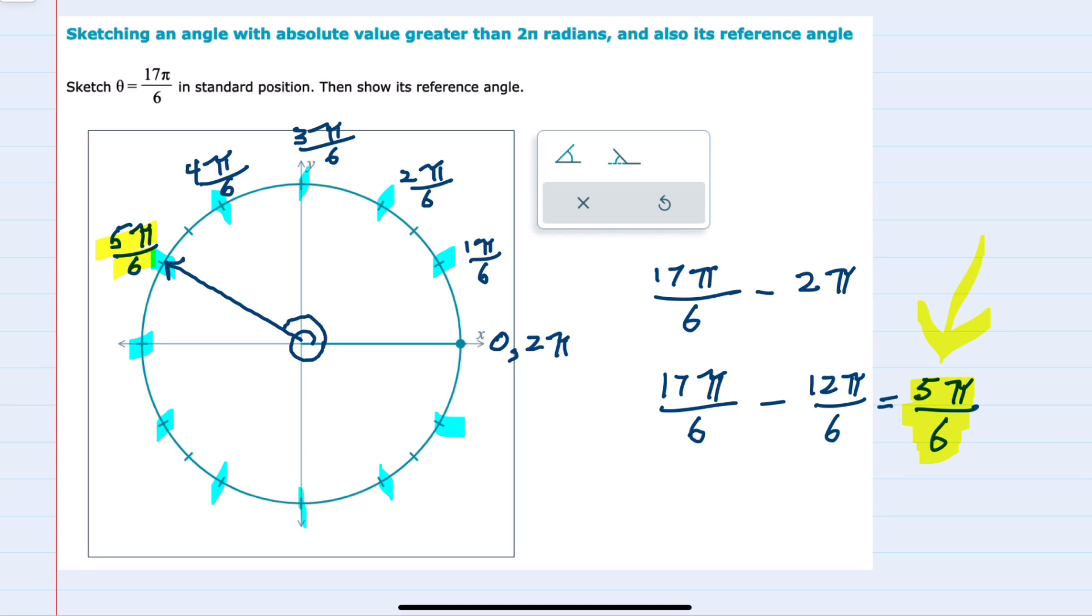This distance around is 17π/6. But we're also asked for the reference angle. The reference angle would be the angle made with the x-axis. And since we were just asked to sketch it this sketch would be fine.